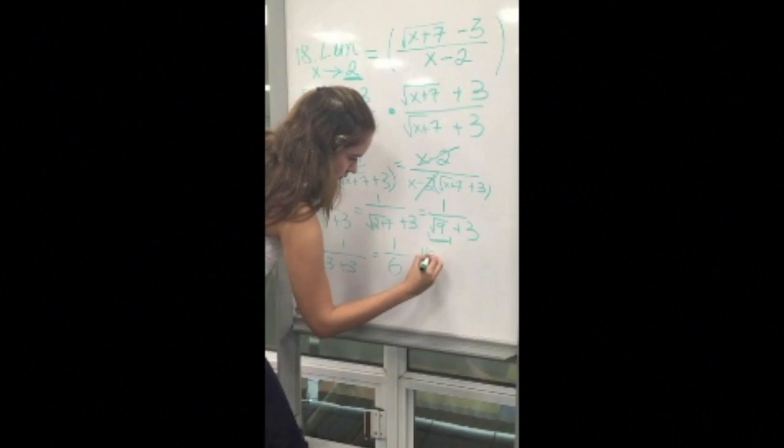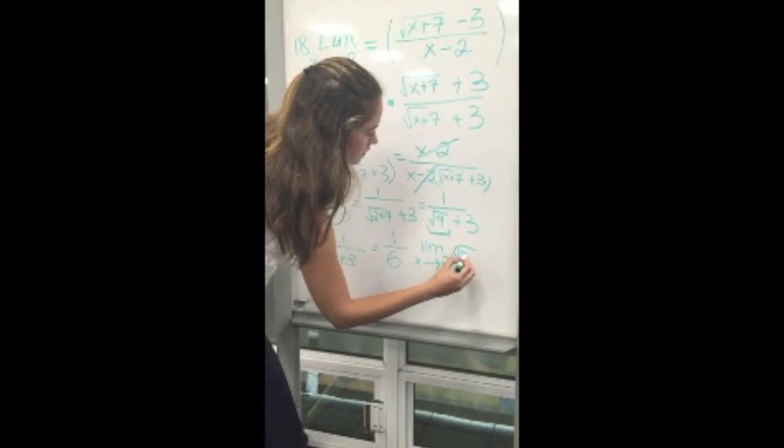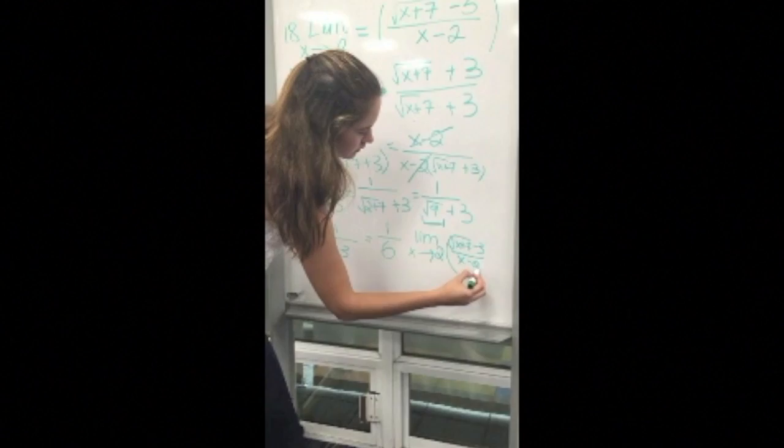This means that the limit of square root of x plus 7 minus 3 over x minus 2 when x approaches 2 is 1 over 6.